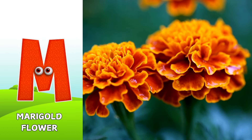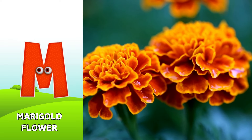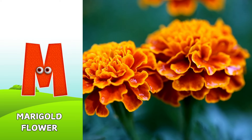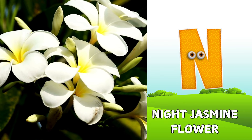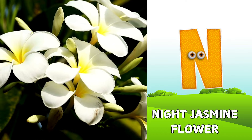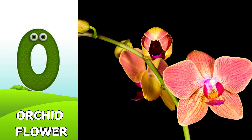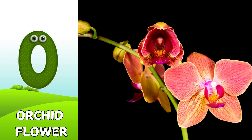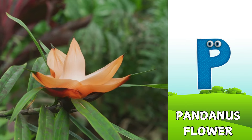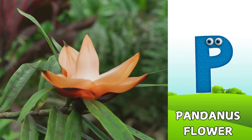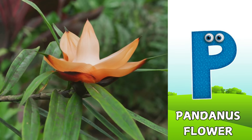M is for Marigold flower. M, M, Marigold flower. N is for Night Jasmine flower. N, N, Night Jasmine flower. O is for Orchid flower. O, O, Orchid flower. P is for Pandanus flower. P, P, Pandanus flower.